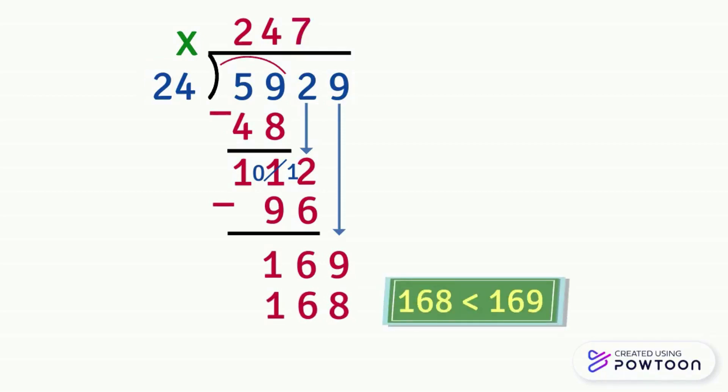168 is less than 169. So we can continue and subtract 168 out of 169. 169 minus 168 equals 1. And since there are no more digits to bring it down then our division is over.